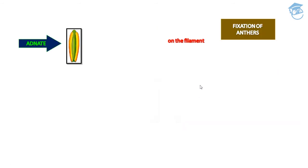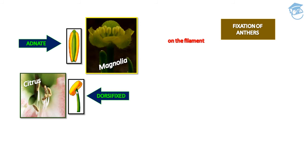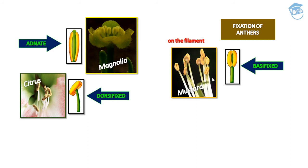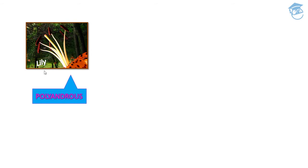Fixation of anthers: adnate type — anthers attached throughout their length, seen in Magnolia; dorsifixed — anther connected to the filament on the dorsal side, seen in Citrus (e.g., lemon); basifixed — seen in mustard; versatile — anther attached at its midpoint allowing free movement, seen in lily. The polyandrous condition is also seen in lily.